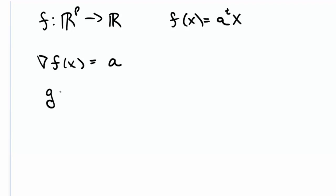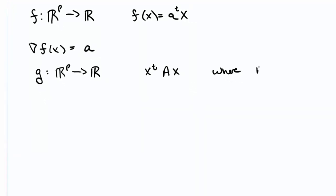Now consider a quadratic form, g, which is also a function from ℝᵖ to ℝ that looks like this, x transpose Ax, where A is a p by p symmetric matrix. Then in this case, the gradient of g works out to be 2Ax.